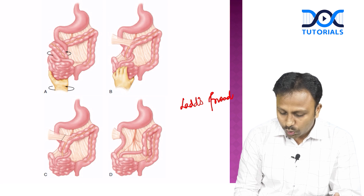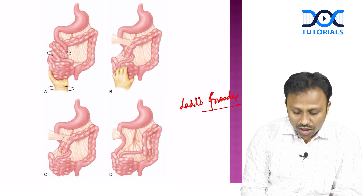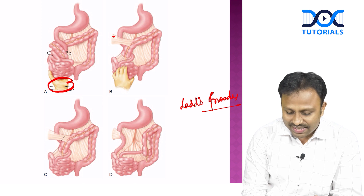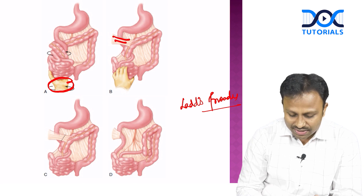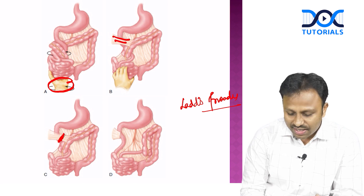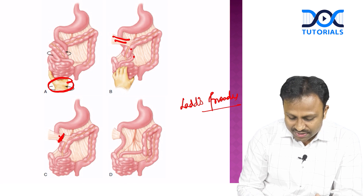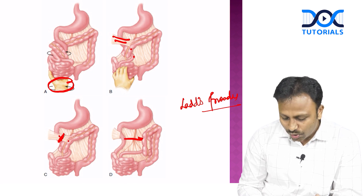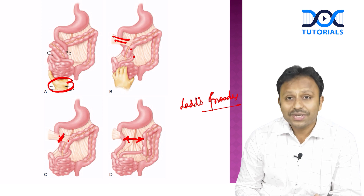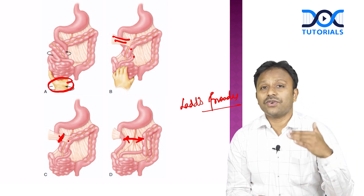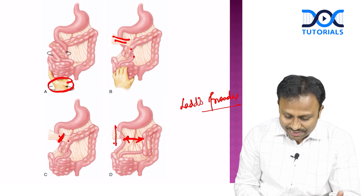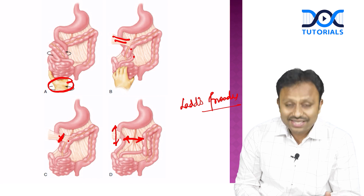What do we do in Ladd's procedure? If there is a volvulus, we derotate the volvulus. And then these are the Ladd's bands — we divide the Ladd's bands, the duodenum and the colon are separated. That is, there is a duodenocolic isthmus. This duodenocolic isthmus is widened to prevent further episodes of volvulus. And as a result, the duodenum is straightened.